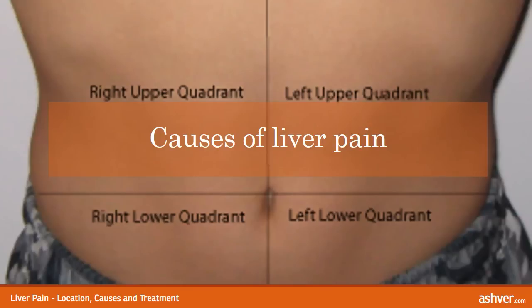Rare inherited disorders such as haemochromatosis and Wilson's disease can cause hepatitis, cirrhosis, and finally liver failure. Liver damage can also occur due to exposure to toxins, viral infections, and side effects of prescribed drugs. Other causes of liver pain include gallstone disease, disturbances in the bile duct, irritable bowel syndrome, right lower lung pneumonia, gastritis characterized by inflammation due to increase in acidity, and ascites characterized by buildup of fluid causing abdominal pain.